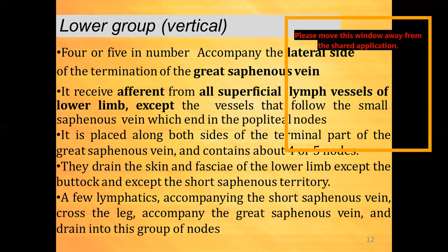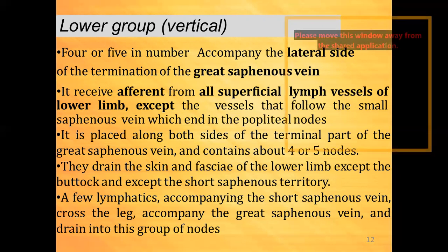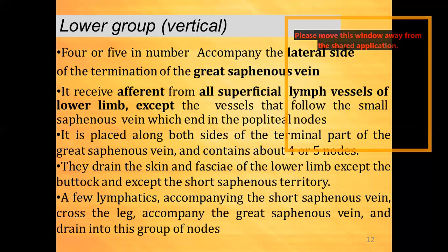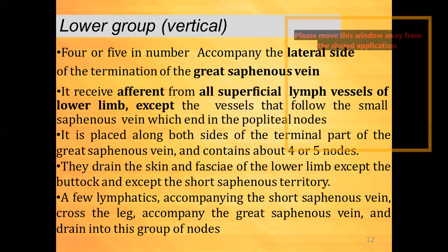The lower vertical group consists of four or five lymph nodes, which accompany the lateral side of the termination of the great saphenous vein. They receive afferents from all superficial lymph vessels of the lower limb, except the vessels that follow the small saphenous vein, which end in the popliteal nodes. They drain the skin and fascia of the lower limb, except the buttock and the short saphenous territory. A few lymphatics accompanying the short saphenous vein cross the leg, accompany the great saphenous vein, and drain into this group of nodes.